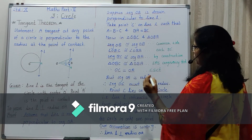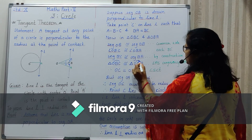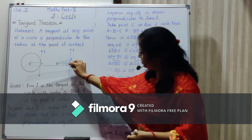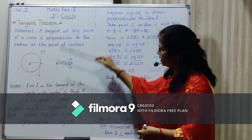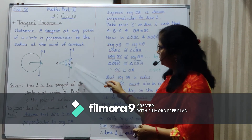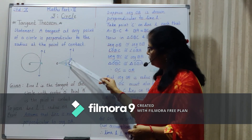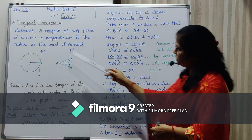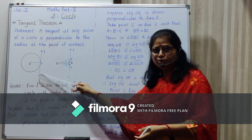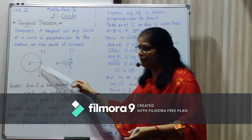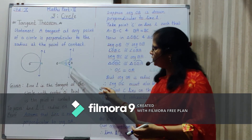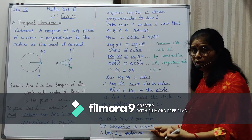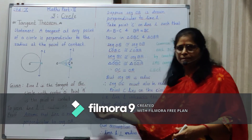Draw segment OC. We get two triangles: triangle OBC and triangle OBA. Three elements are congruent: segment OB is common, angle OBC is congruent to angle OBA (each 90°), and segment BC is congruent to segment BA by construction. Therefore triangle OBC is congruent to triangle OBA by the SAS congruency test. Therefore OC equals OA, meaning OC is also a radius of the circle. This gives two points A and C common to line L and the circle. But line L is a tangent, which by definition has only one common point with the circle. This is a contradiction. Therefore our assumption is wrong, and line L is perpendicular to radius OA.